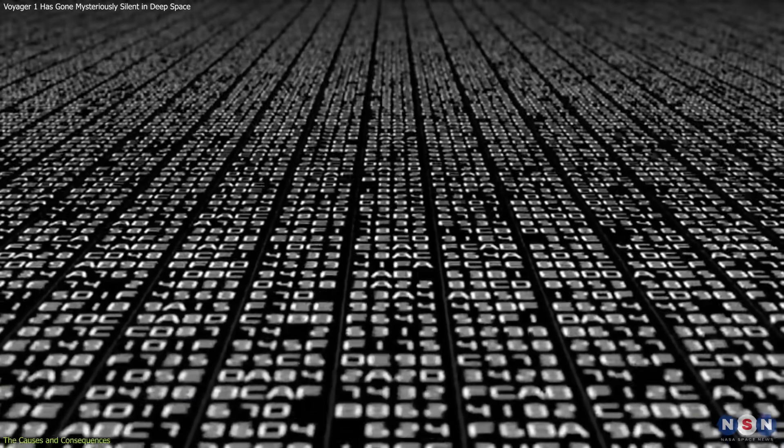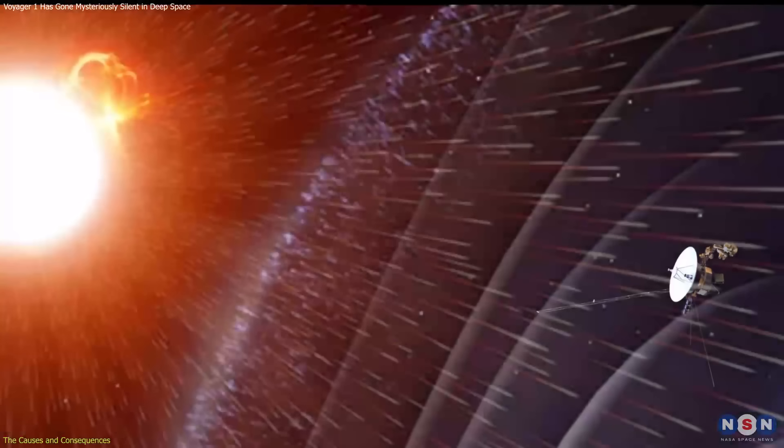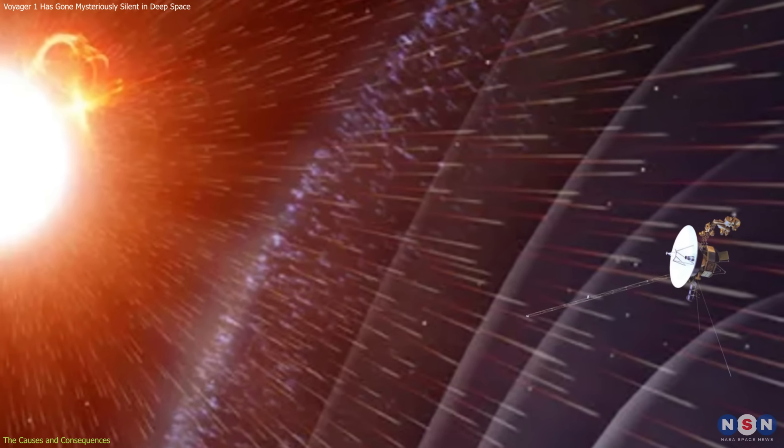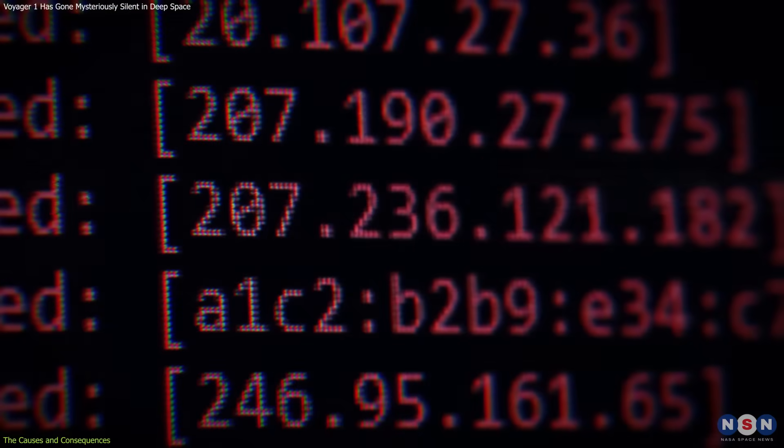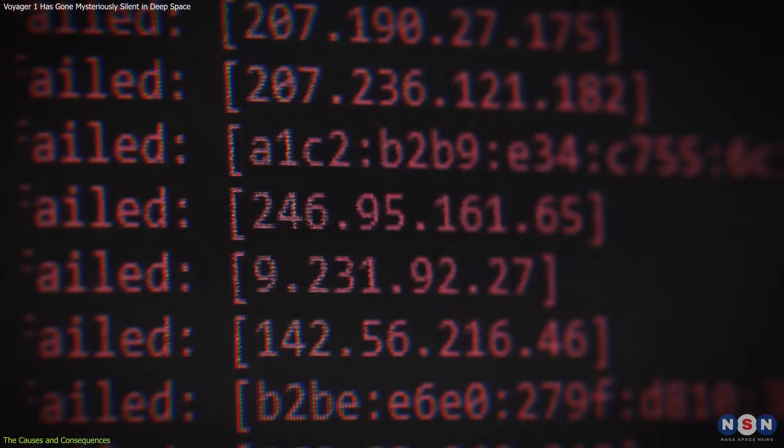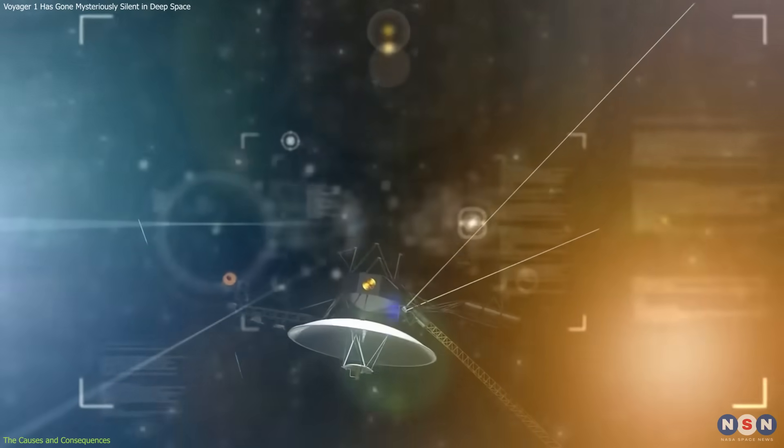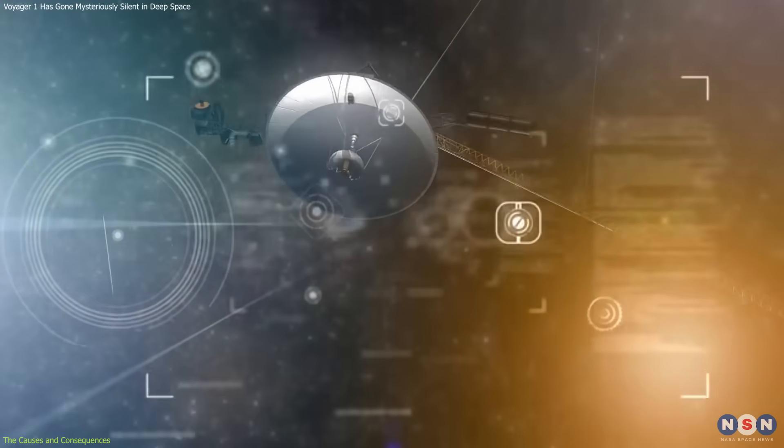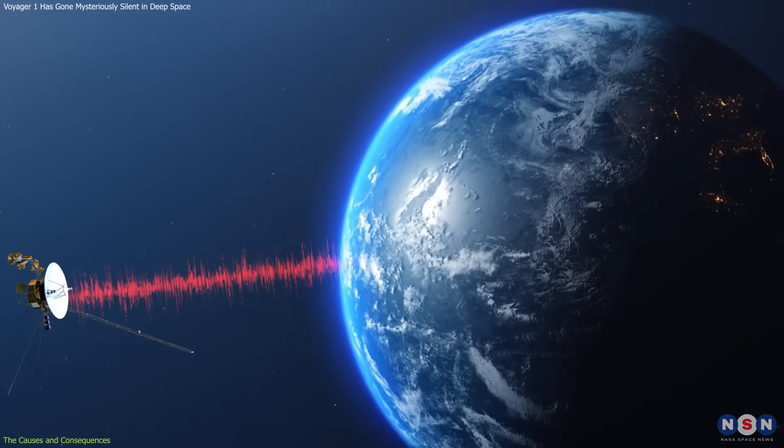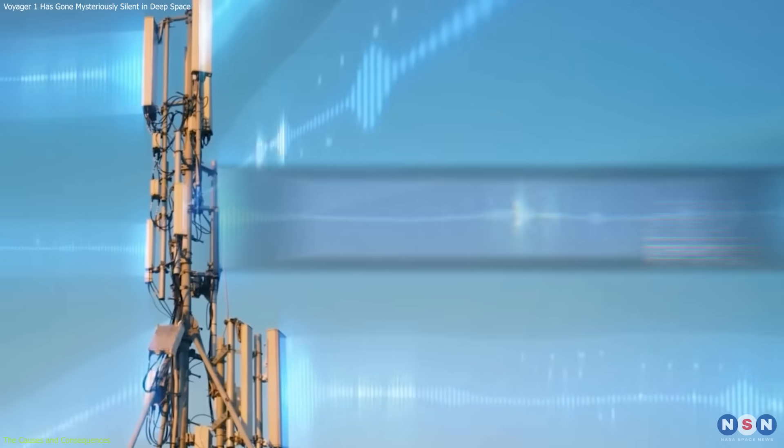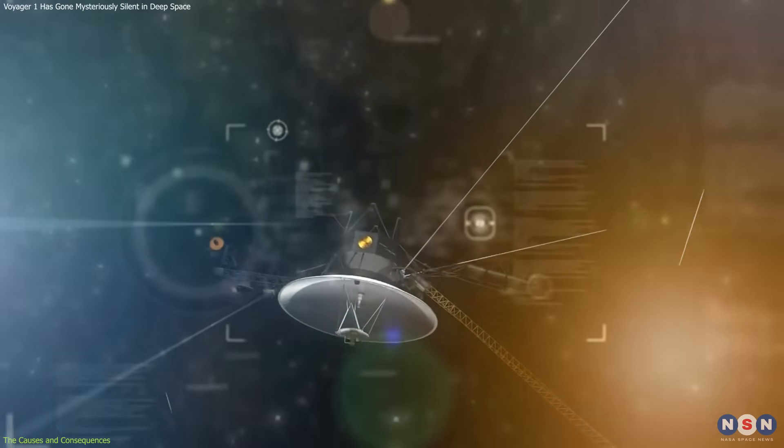This software is stored in the memory of the computers, which can be corrupted or overwritten by cosmic rays, radiation, or other factors. It can also have bugs or errors which can cause unexpected or undesired behaviors. For example, in 1998, Voyager 1 experienced a software glitch that caused it to enter a safe mode, a state where it shuts down all nonessential systems and waits for instructions from Earth. The glitch was traced to a faulty command that was sent to the spacecraft, and it was fixed by resetting the software.